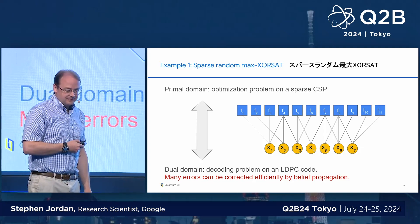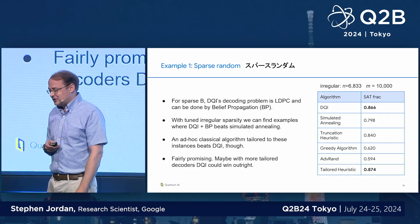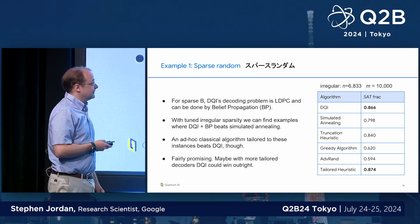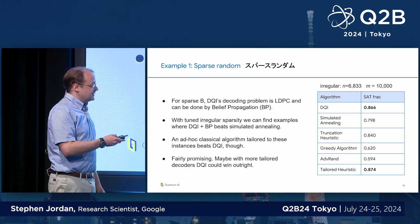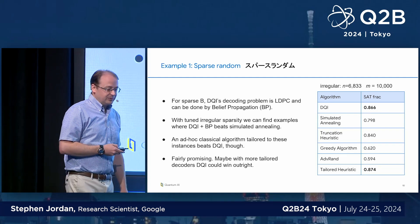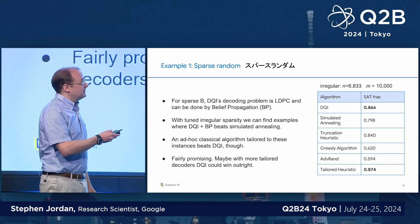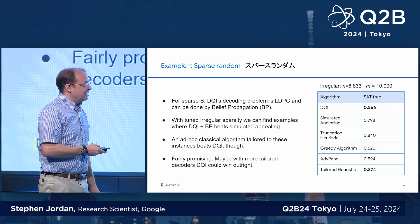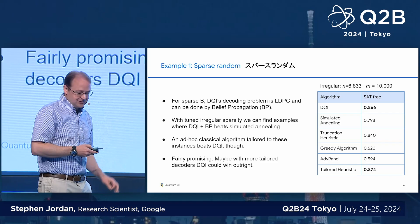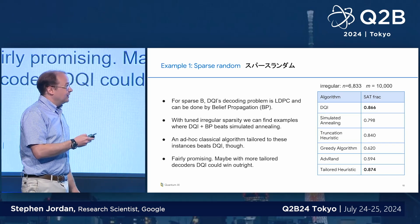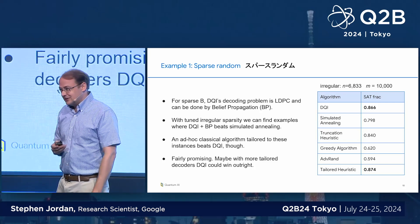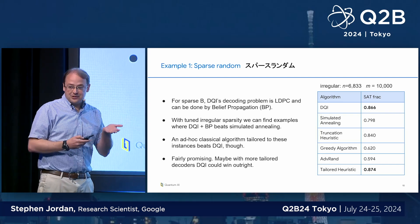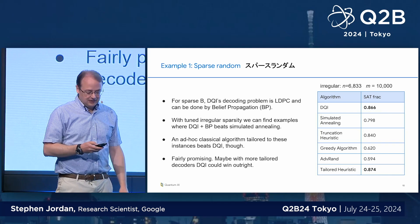When we try standard off-the-shelf belief propagation decoders on randomly generated instances and compete against simulated annealing and various other general-purpose classical algorithms, we are able to achieve a better fraction of clauses satisfied than any of these general-purpose algorithms. Although we found that a very customized classical algorithm for these specific instances still eked out a win over our quantum algorithm. We took this as encouraging evidence that with further effort from the scientific community optimizing decoders for the kinds of codes arising from this reduction, we could potentially get an outright win for quantum computing.